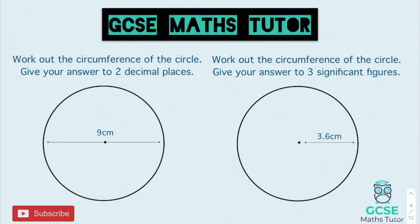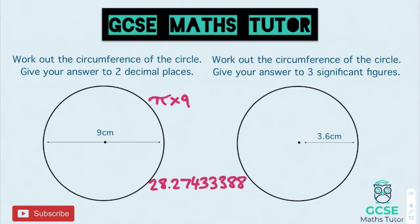There are two questions — pause the video, have a go, and we'll go over the answers. For the first one, we've been given the diameter, so we do pi times 9. Typing that into the calculator and converting to a decimal gives 28.27433388. This question says two decimal places, so chop after the 7 — it doesn't round up because there's a 4 after it — giving 28.27 centimetres.